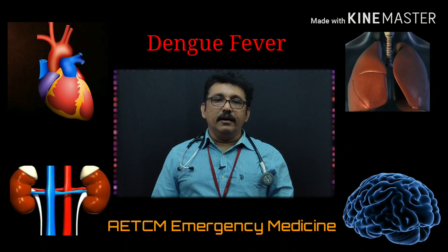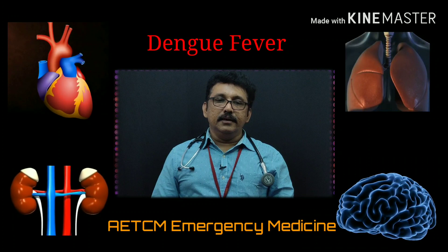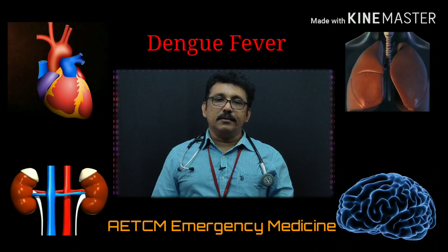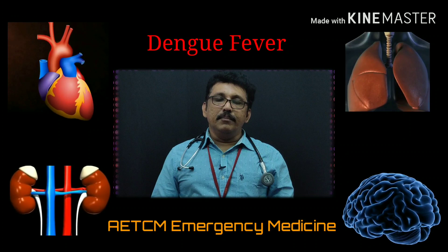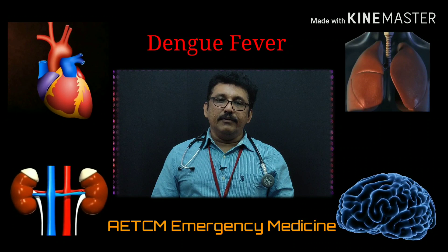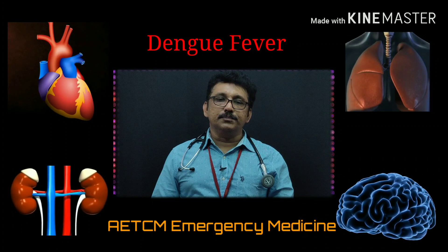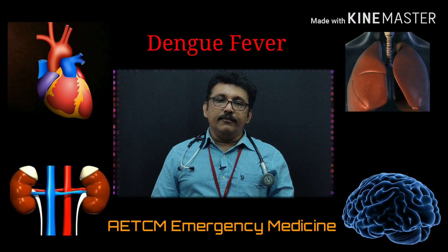For investigations, you can do a complete blood count. WBC count may be slightly reduced. Platelet can be reduced — most dengue cases will have slightly reduced platelet count initially, and some patients go to severe thrombocytopenia below 10,000 with bleeding tendency. CRP may be elevated as it is an inflammatory condition. Procalcitonin will be normal because it is elevated only in bacterial infection, not viral infection.